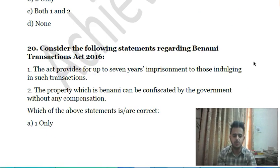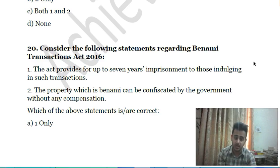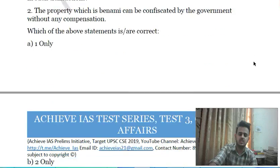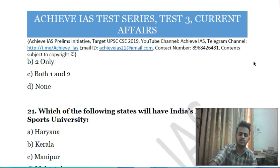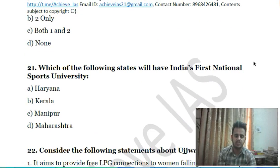Twentieth question: consider the following statements about the Benami Transactions Act 2016 — first, the act provides for up to seven years imprisonment for those indulging in such transactions; second, property which is benami can be confiscated by the government without any compensation. Choose the correct answer.